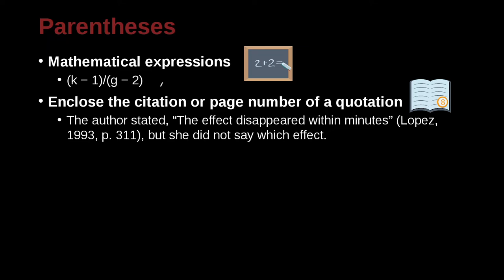You use it to include citation page numbers or page numbers for quotations. So for example, here I write a quotation. The author stated, quote, the effect disappeared within minutes. Now please note, we already studied this. A comma here, because I'm going to begin a quote. This is an introductory phrase. And then here I have my quotation mark. This is exactly copied from the person's writing. Who wrote this? And then here I have my citation, Lopez, comma, 1993, comma, page 311.